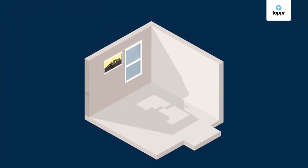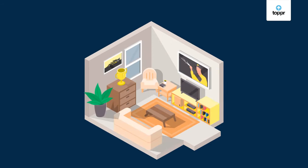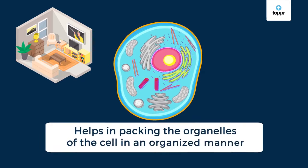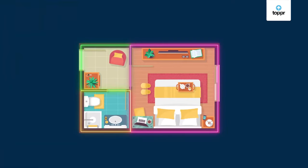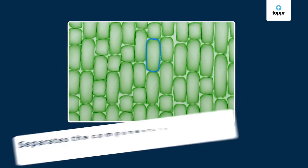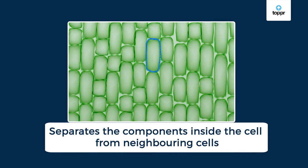Just like the walls of a room allow us to place things like furniture and appliances in an organized manner, the cell membrane helps in the packing of organelles of the cell in an organized manner. Similarly, the cell membrane also separates the components inside the cell from neighboring cells.